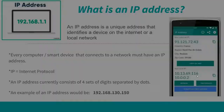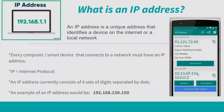What is an IP address? It is a unique address that identifies a device on the Internet or a local network. Every computer or smart device that connects to a network must have an IP address. IP stands for Internet Protocol. An IP address consists of four sets of digits separated by dots — for example, 192.168.130.150.